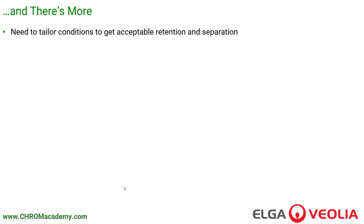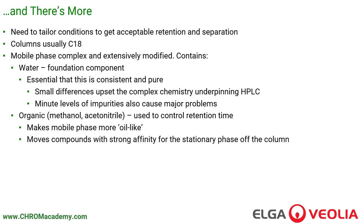There's a lot more to it than that. We really need to tailor the conditions to get acceptable retention and separation. Although the columns are usually C18, the mobile phase is an extremely complex mixture and usually extensively modified. It contains water, which is absolutely the foundation component. We must retain a mobile phase that has the opposite polarity to the C18 oil-like stationary phase. It's essential that any water we use is consistent and very pure. Small differences in the water upset the complex chemistry underpinning HPLC, and minute levels of impurities can cause major problems with the stability, precision, and accuracy of the HPLC process.